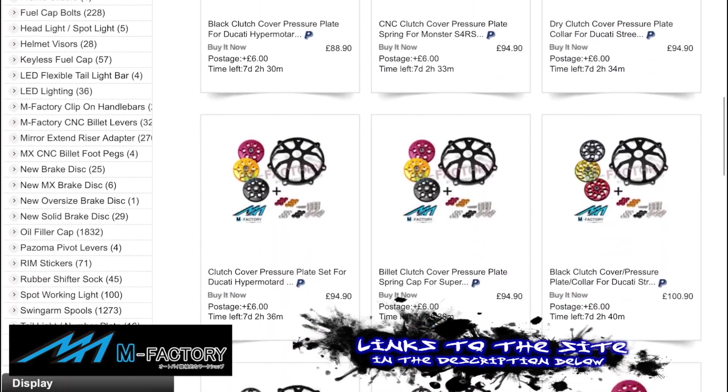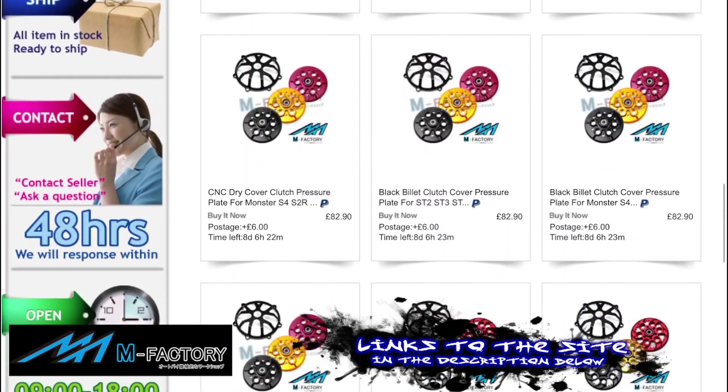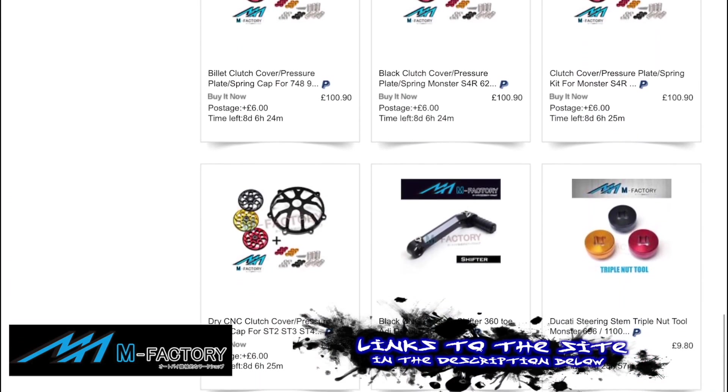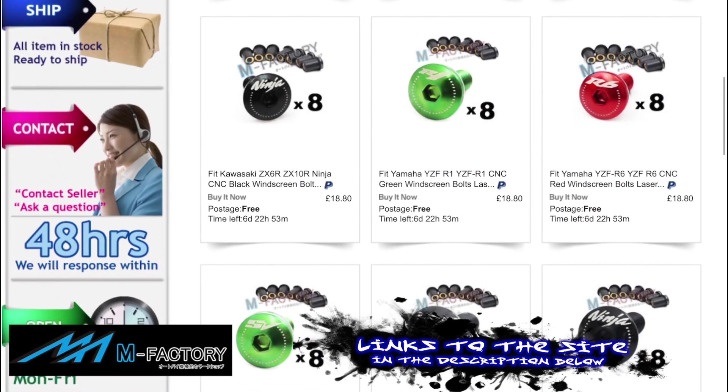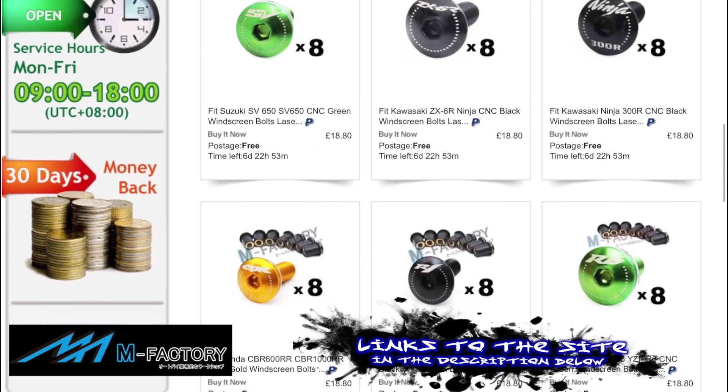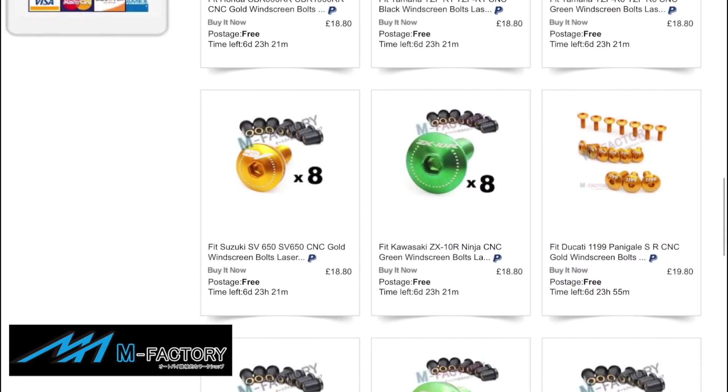They have a ton of parts and mods and all kinds of stuff on their eBay store for just about any bike you can think of. They also do laser engraved parts such as screen and fairing bolts in many colors for many brands and different types of bikes—R6, SV, and so on.